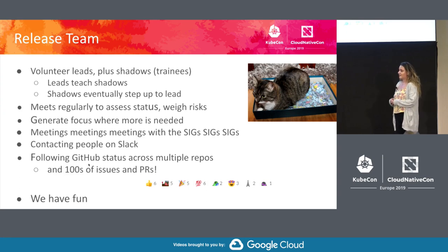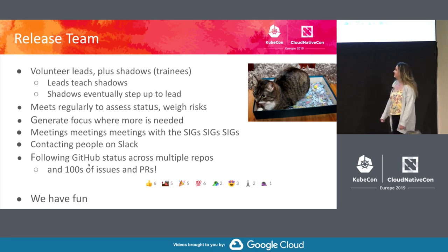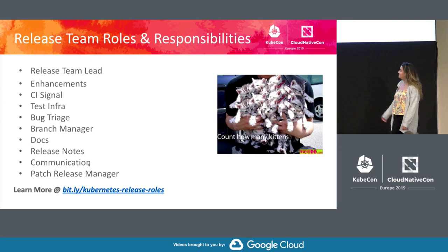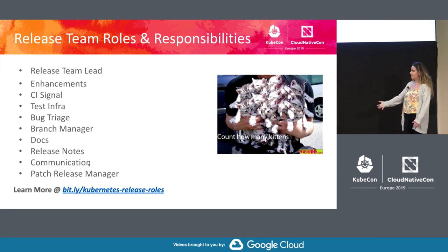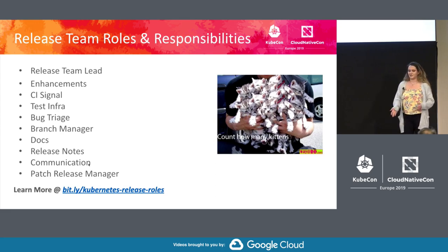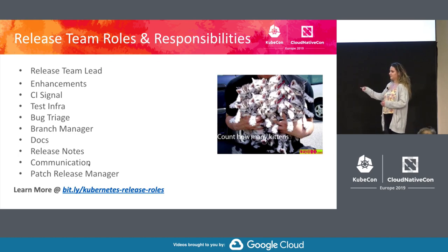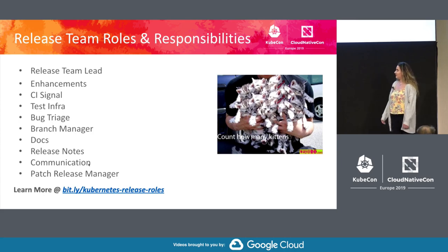We do have a lot of fun on the release team. We have a bunch of different roles depending on what you're interested in: lead, enhancements, CI signal, test infra, bug triage, branch management, docs, release notes, comms, and patch release management. Most of these are relatively straightforward in what they do. All of the roles are described on the Kubernetes GitHub, so you can learn more about them and see what interests you most and where you might want to get started.